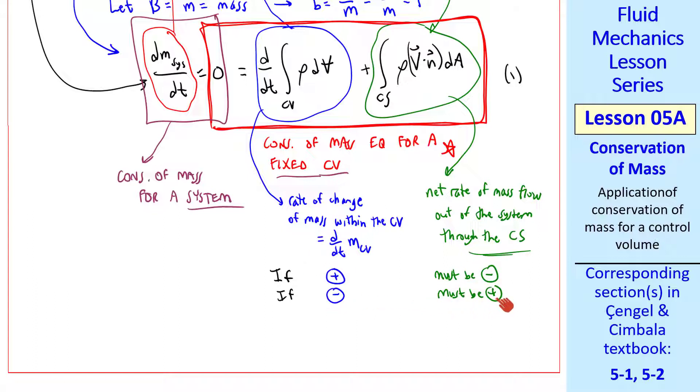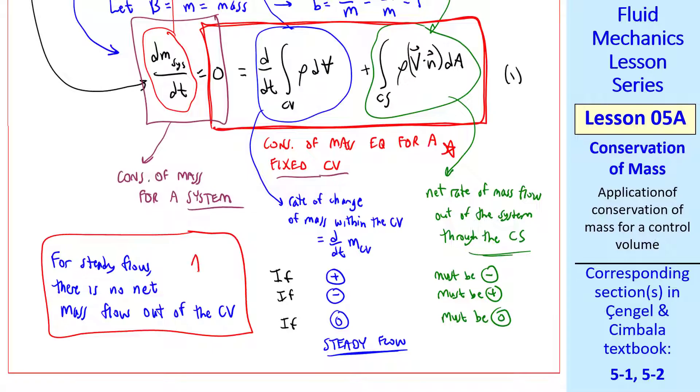If the volume term here is zero, which means it's a steady flow, then the only way to keep these two terms adding up to zero is for this control surface integral to also be zero. So for steady flow, there's no net mass flow out of the control volume. In other words, what goes in must come out.